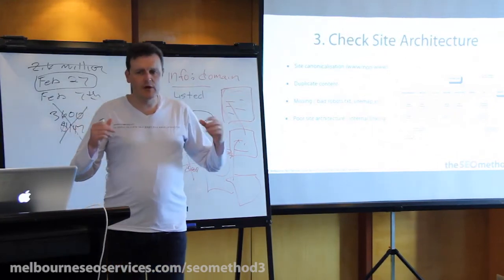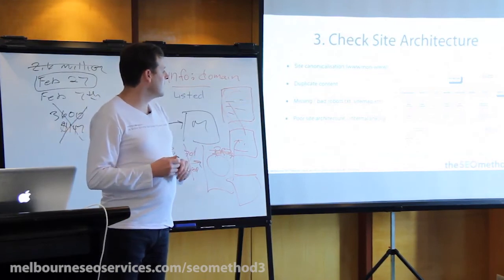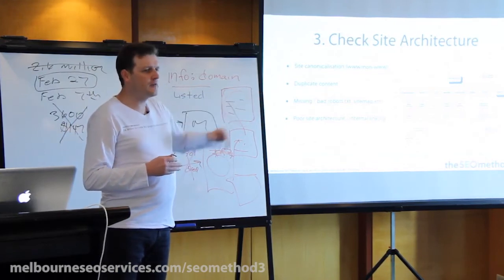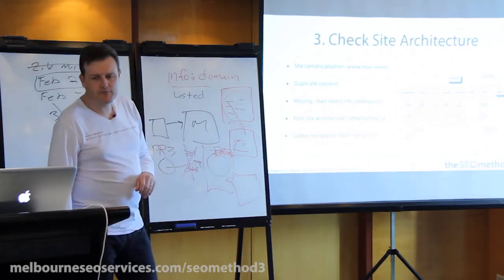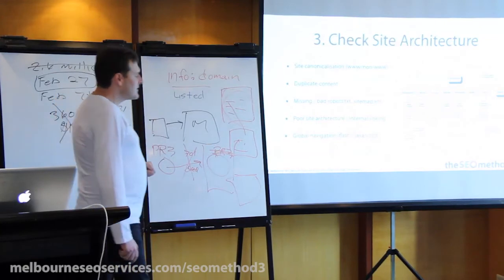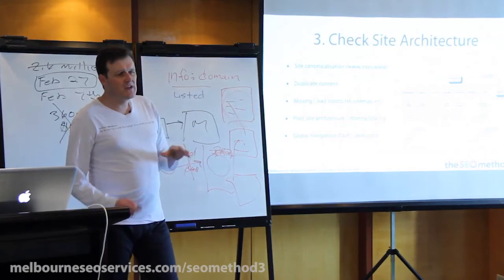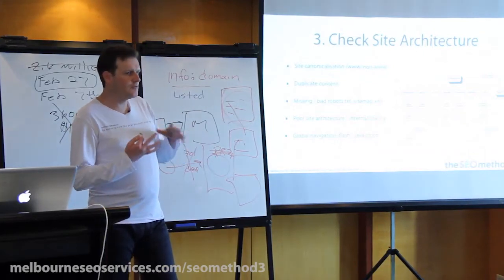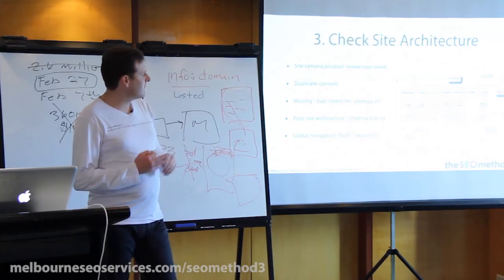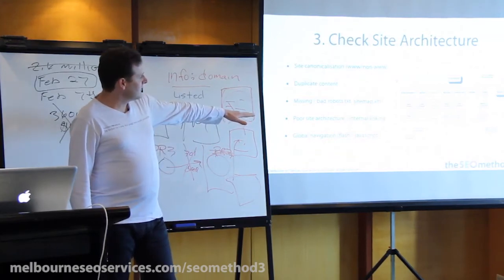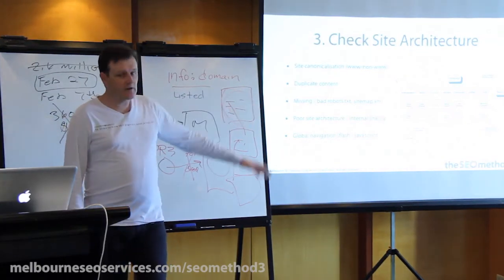We often find that information architecture hasn't been thought through. Internal linking is another issue — the internal linking policy might not be great; they might just have footer links and that sort of thing. On global navigation, Creative Smiles is a good example of what not to do — they've got Flash navigation. Google can sort of crawl Flash, but it's not ideal, and the same goes for JavaScript navigation. We really want our global navigation to be plain HTML links — that's the best navigation to have.